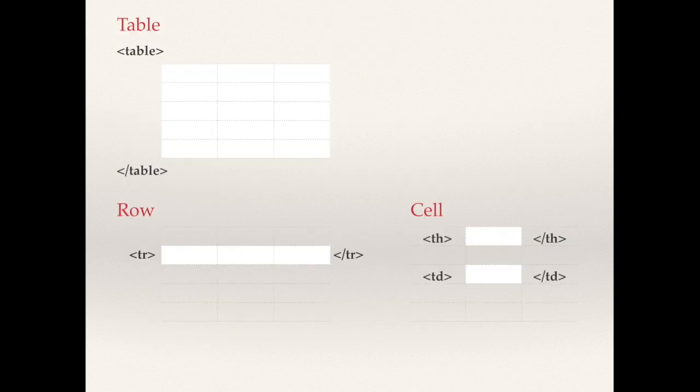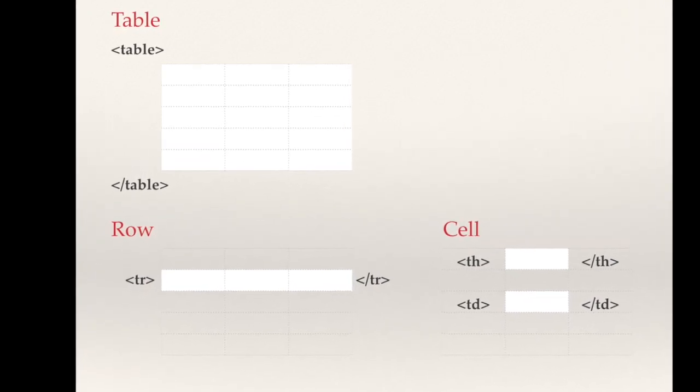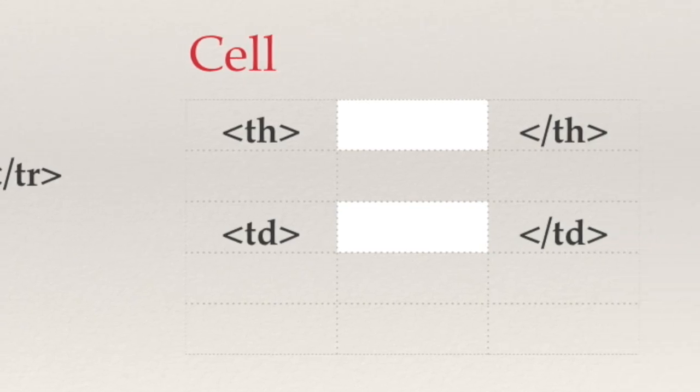Here is how it looks visually. You use the table tag to mark the whole table, the tr tag to mark each row, and the th and td tags to mark the individual cells.